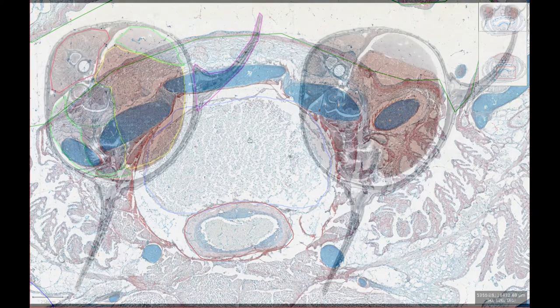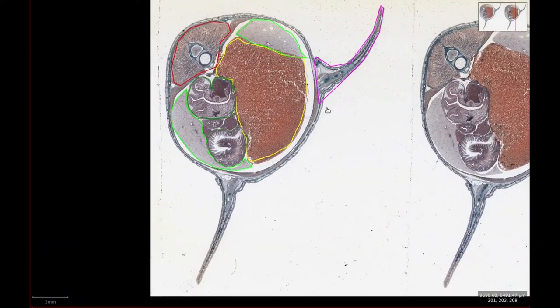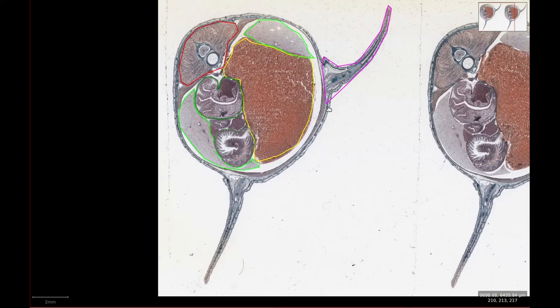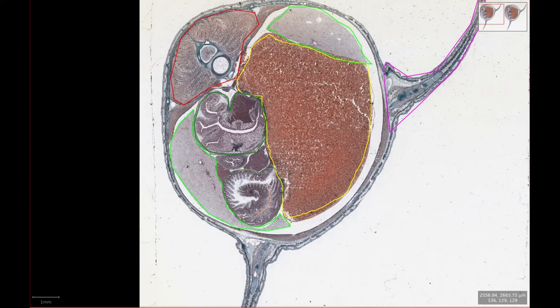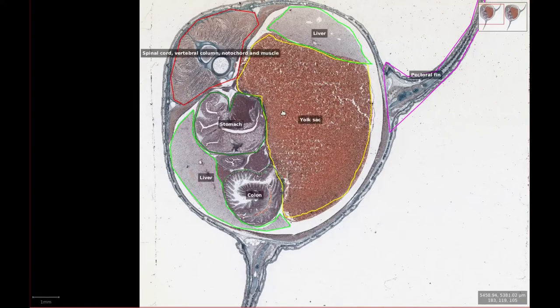The final slide in this series is 249, which is taken through the coelomic cavity at the level of the pectoral fins, which we can see coming off on either side. Similar to 246, there is the spinal cord, vertebral column, notochord, and dorsal muscles at the top. Within the coelomic cavity we have good views of all of the major organs, including two sections of liver and a section of stomach, colon, and yolk sac.